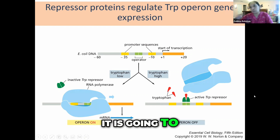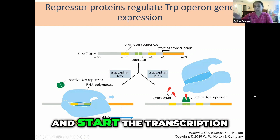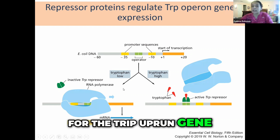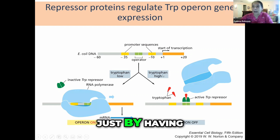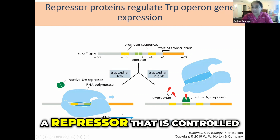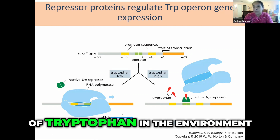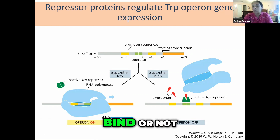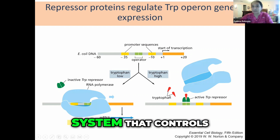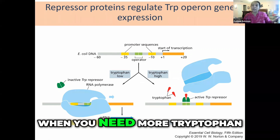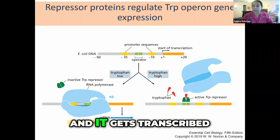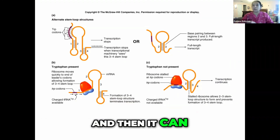Now when RNA polymerase binds to it, it is going to walk down and start the transcription for the tryptophan gene. So just by having a repressor that is controlled by the amount of tryptophan in the environment — by allowing it to bind or not be available to bind — this is a very simple, elegant system that controls when you need more tryptophan. It gets activated, transcribed, and then translated.